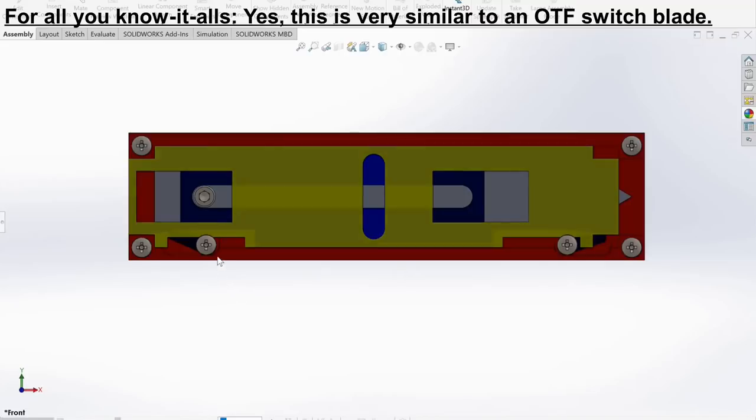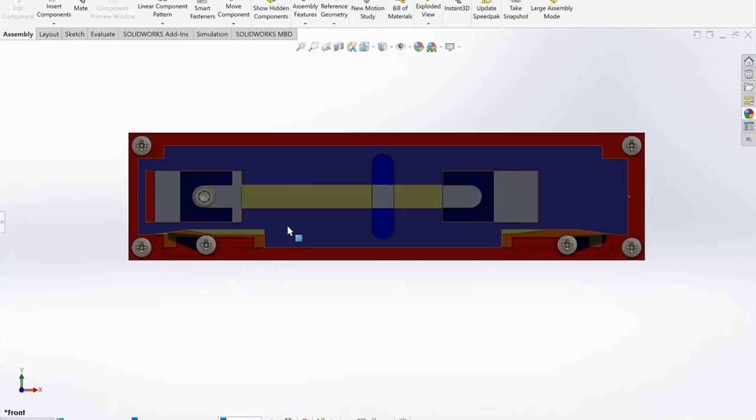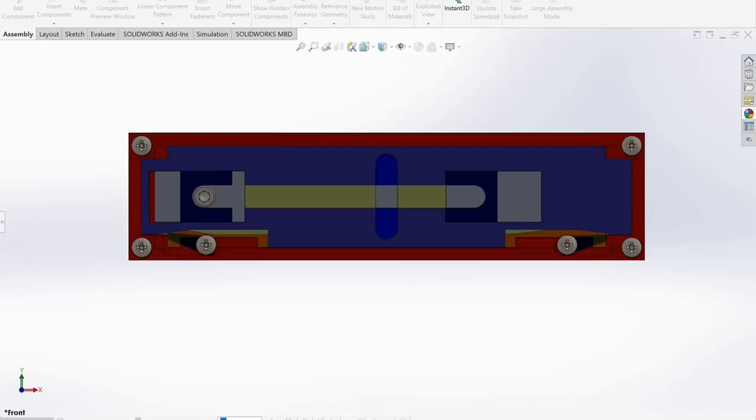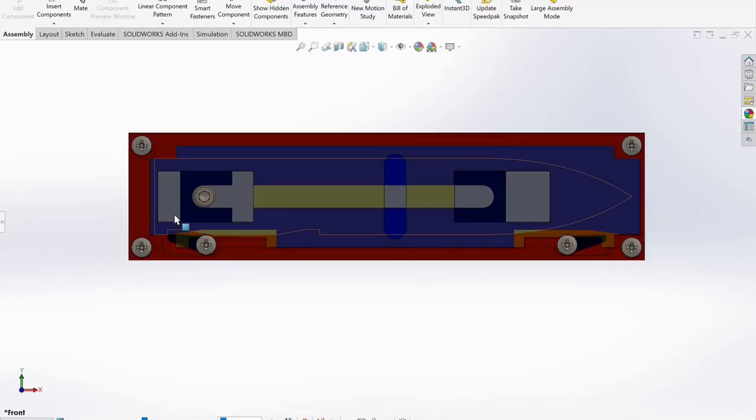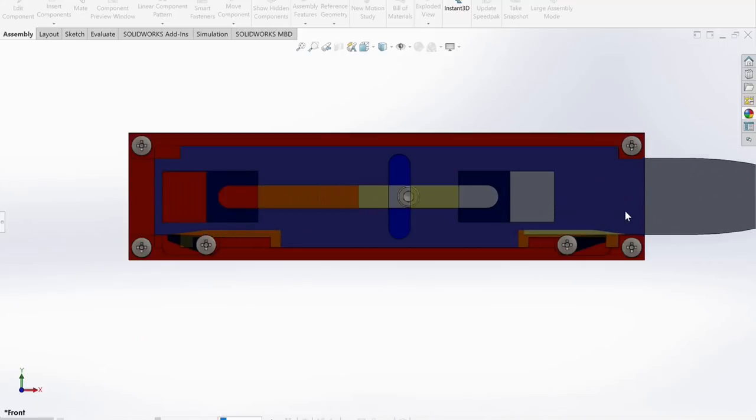So let's start the animation for now and I want you to pay attention to this area here. As soon as the blue part gets pushed forward, I call this the main slider, the catch gets pushed down and at this point here the catch doesn't hold the blade anymore. Therefore the purple part can fling the blade forwards and eject it.